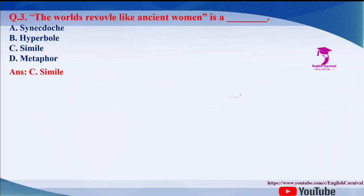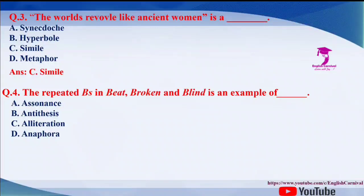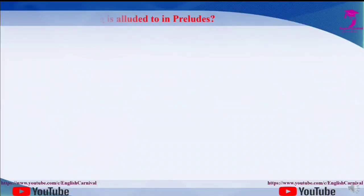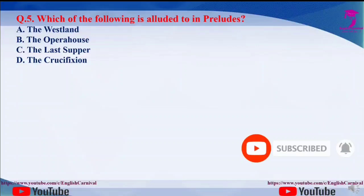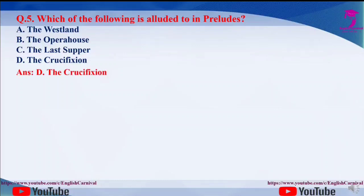Question number five: which of the following is alluded to in Preludes? Options are A. The Wasteland, B. The Opera House, C. The Last Supper, and D. The Crucifixion. The correct answer of this question is D, that is the Crucifixion.